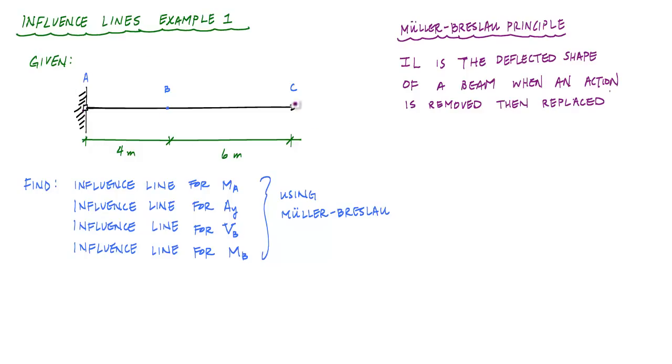It's fixed at end A, and it's free at end C. And point B is just a point along the length of the beam. It's not a hinge.